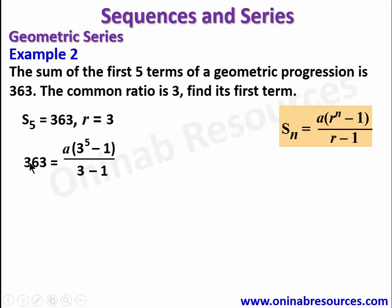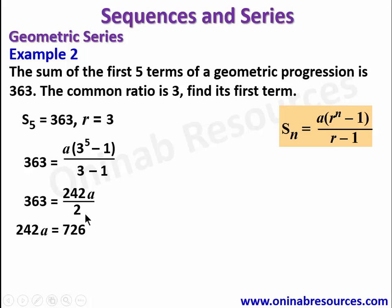Simplifying, 3^5 - 1 gives 242, so we have 363 = 242a / 2. Cross-multiplying gives 242a = 726, which is 363 times 2. Dividing 726 by 242 gives a = 3. So the first term is 3. That's the end of the solution to Example 2 and the end of this tutorial. I hope you enjoyed it — please share with your loved ones. Until we come your way again, goodbye.